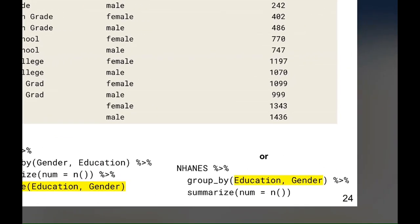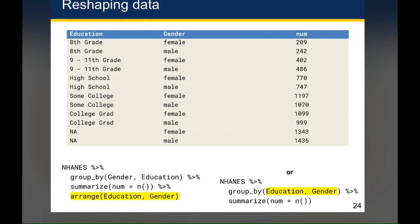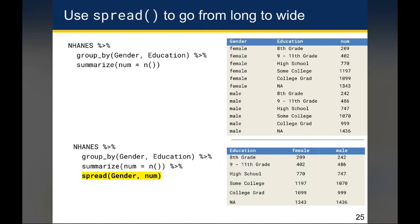In my view, this is still a little bit harder to read than if we had separate columns for female and male. So the next thing we'll do is talk about how we can create those columns from this data frame. We've already talked about how to create the data frame on the top right: start with NHANES, group by gender and education, and summarize to count the number of rows for each grouping category. If we wanted to convert that into the bottom right data frame, we only have to add one more function to that pipe, and that's the spread function.